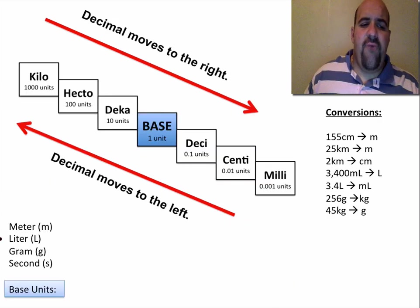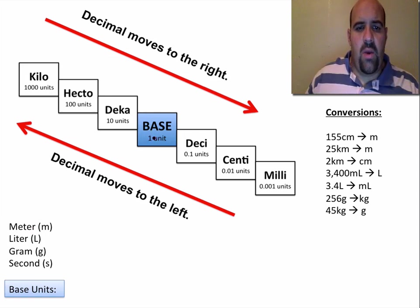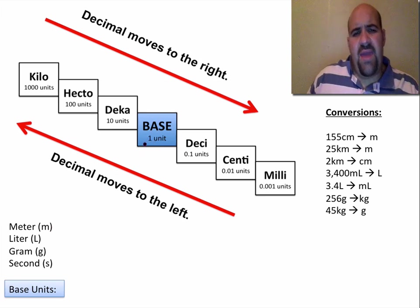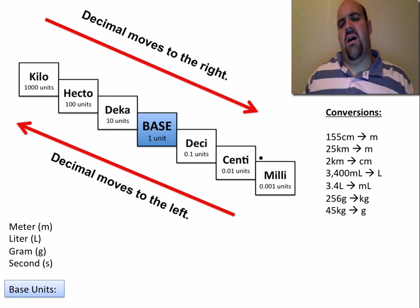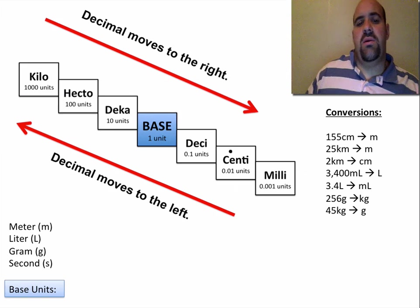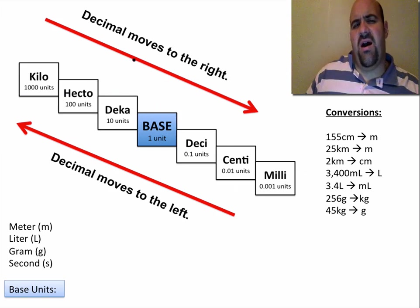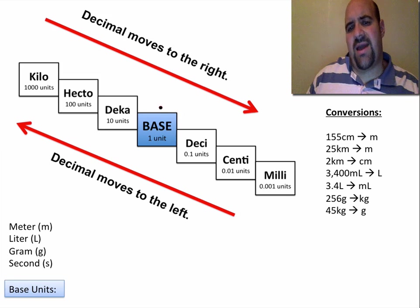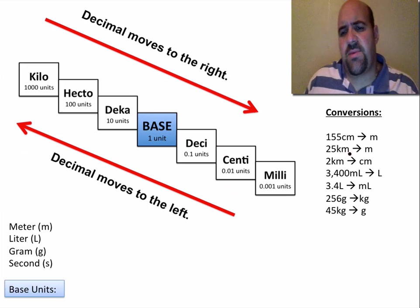There are four base units we're going to use: meter, liter, gram, and second — they all go in the base position. We're going to do conversions using the ladder method. The idea is that if we want to convert between centimeters and meters, there are steps. When you're going down these steps, the decimal moves to the right. When you're going up the steps, the decimal moves to the left.